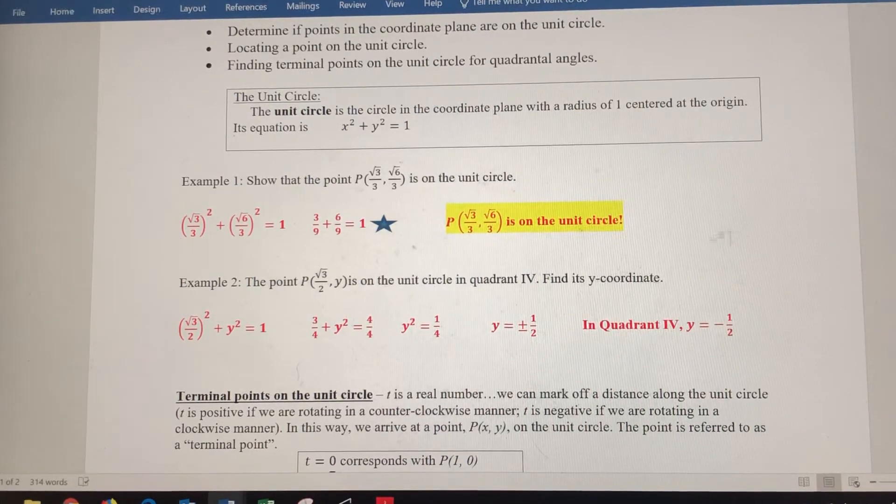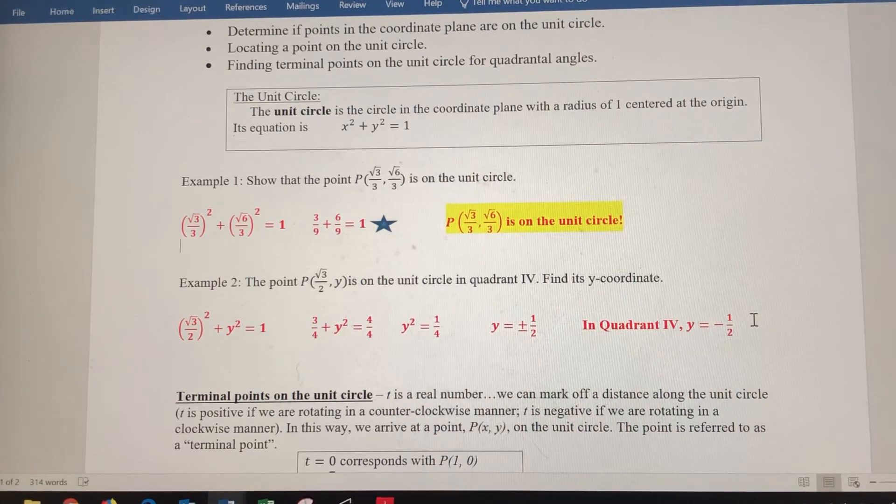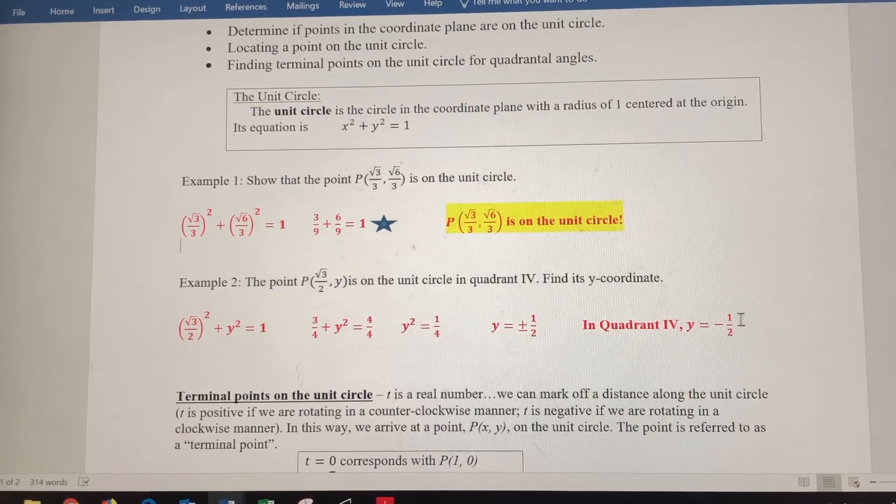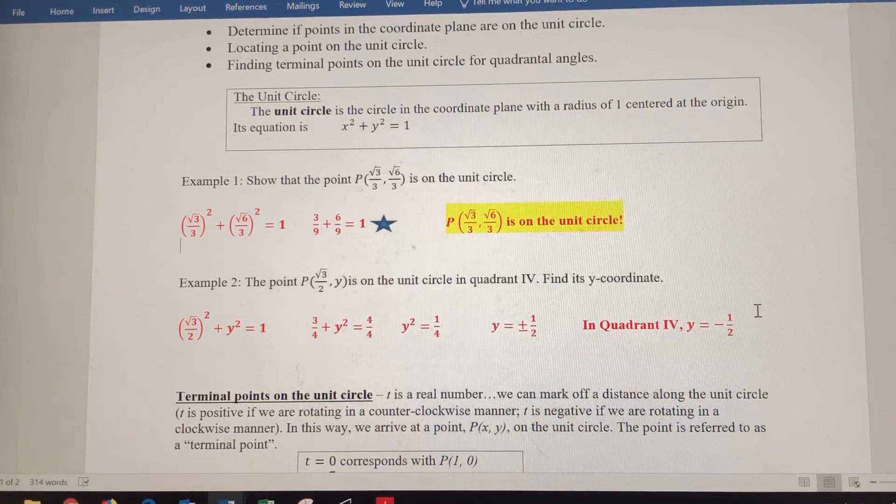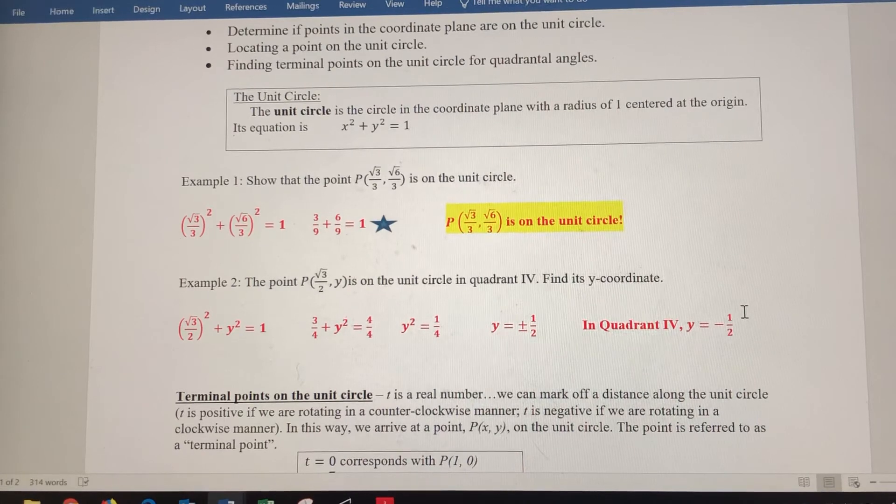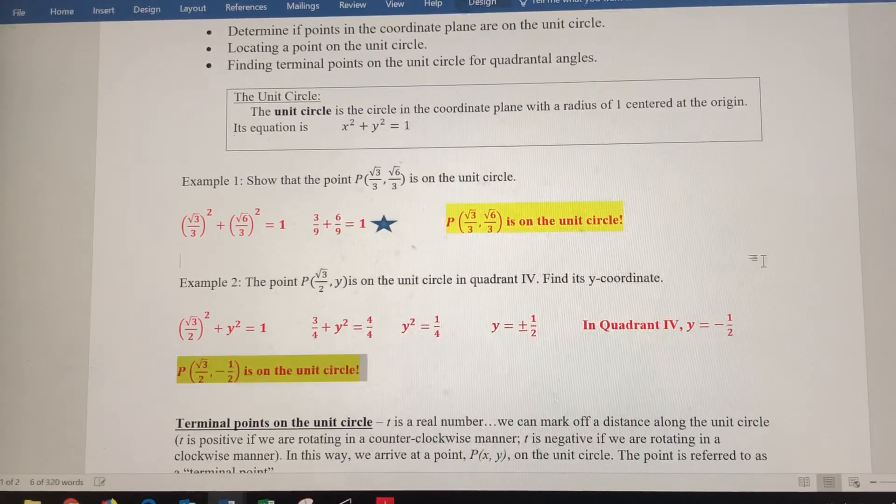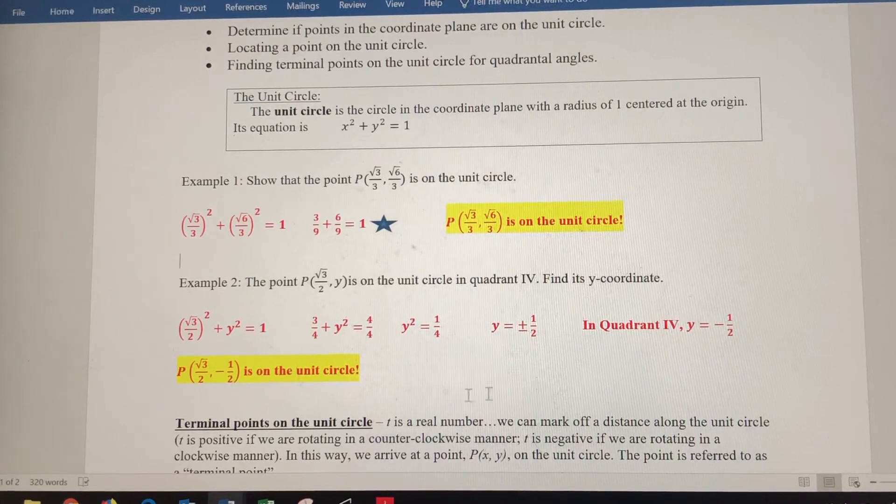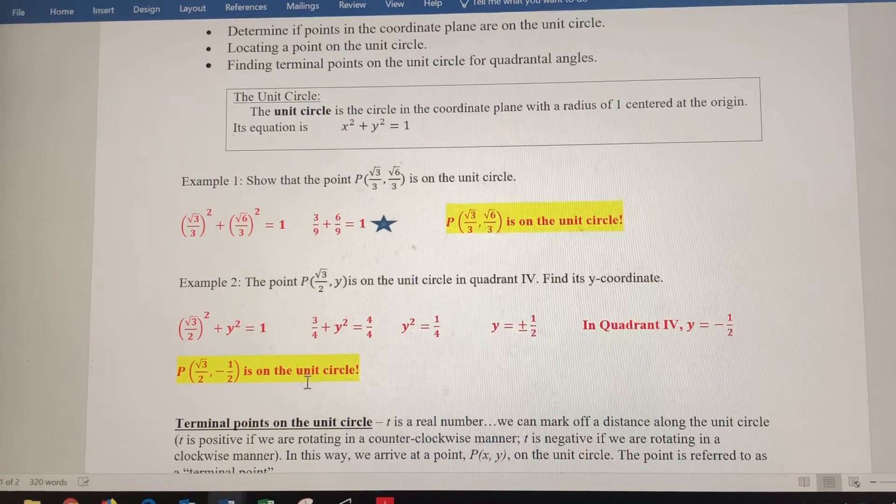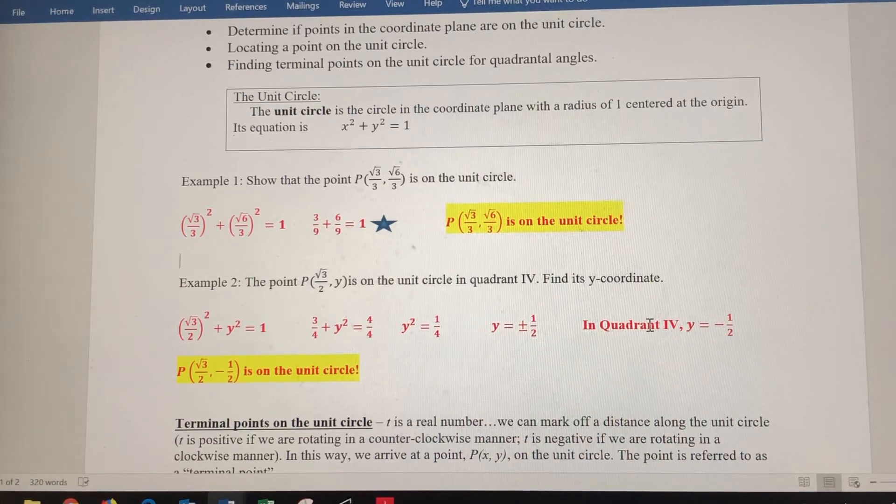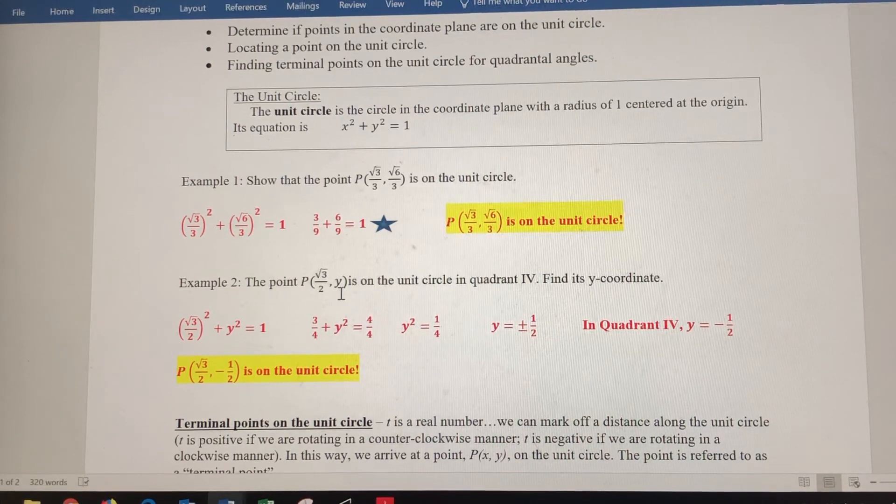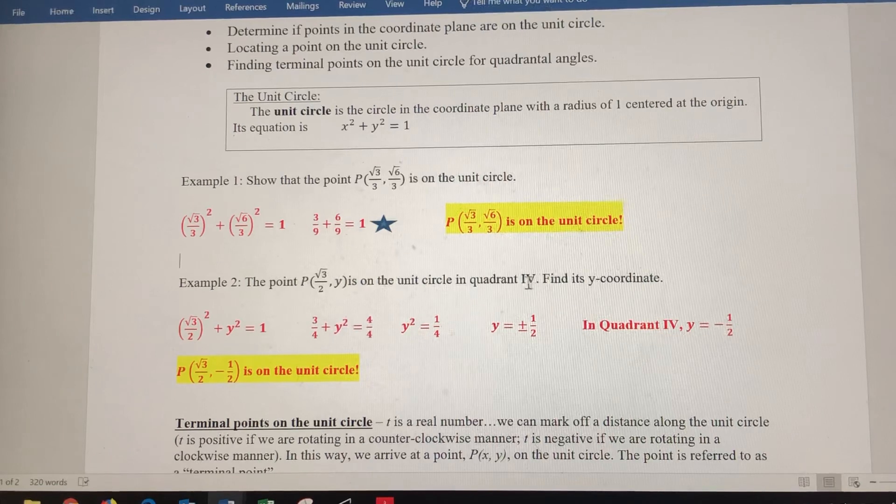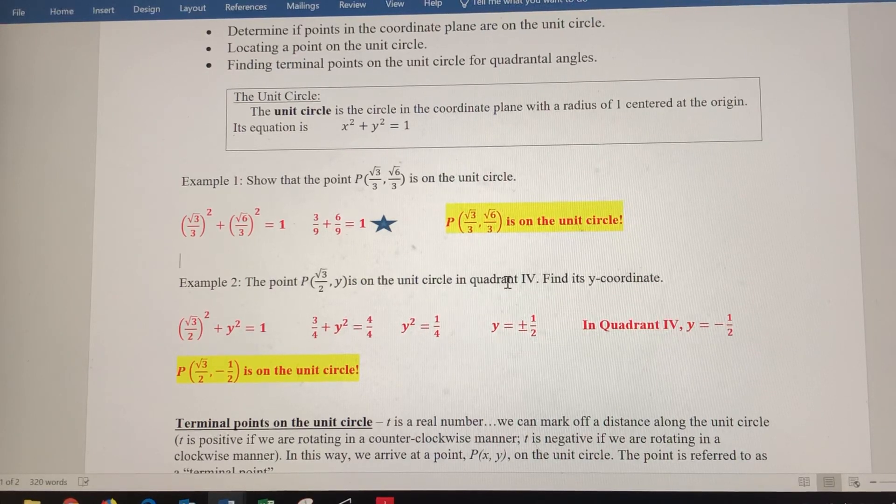So the y value is going to be negative 1-half. If it said quadrant 1 or quadrant 2, we'd use the positive 1-half there. If it said quadrant 3 or quadrant 4, y would have to be negative because it's below the x-axis. So we know then that the point radical 3 over 2, which was given to us, and negative 1-half is on the unit circle, and that's going to be in quadrant 4. So that's how you find a missing coordinate of a point that you know was on the unit circle, and you're provided at least a little bit of information about where that point is.